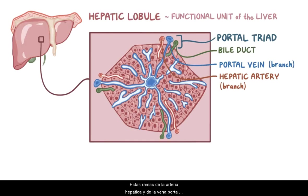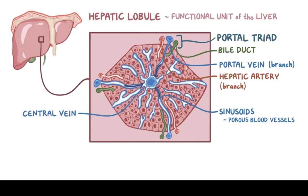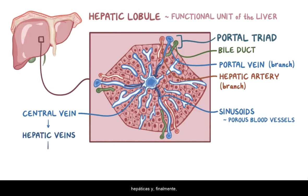Now, these branches of the hepatic artery and the portal vein both drain into very porous blood vessels called sinusoids, which carry blood toward the center of the lobule and drain into the central vein. From central veins, the blood flows into the hepatic veins and eventually drains into the inferior vena cava.